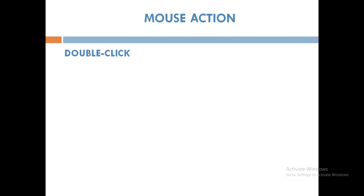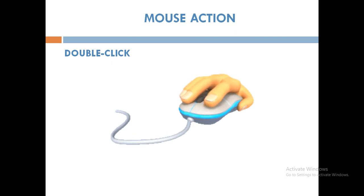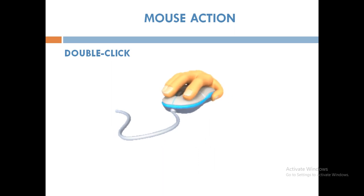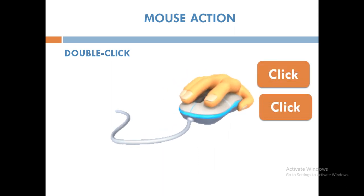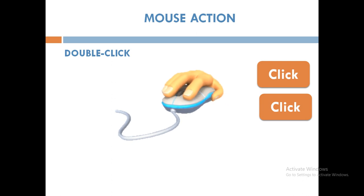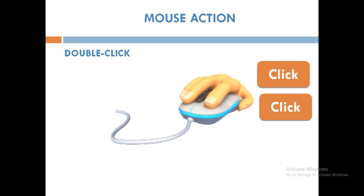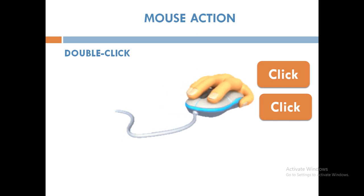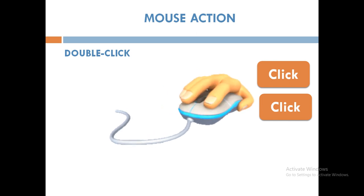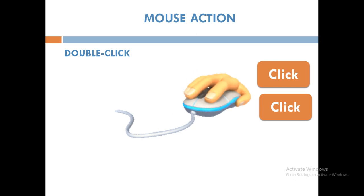The second mouse action is double click. Quickly pressing the left mouse button twice is called double click. A double click opens an item or object on the monitor. So if you want to open an item, you have to quickly press the left mouse button twice.